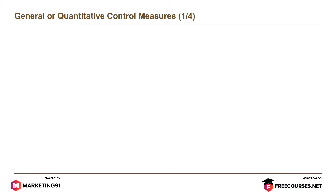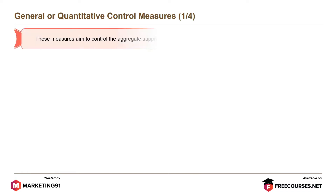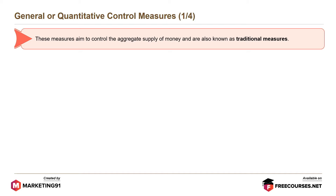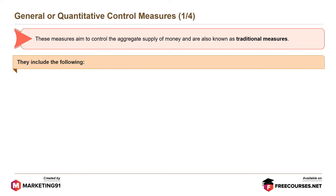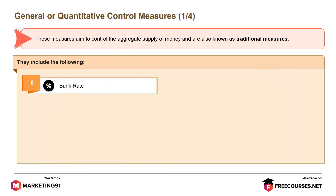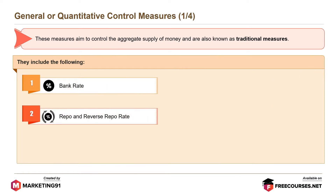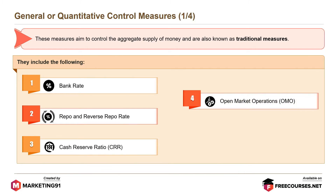General or quantitative control measures aim to control the aggregate supply of money and are also known as traditional measures. They include: bank rate, repo and reverse repo rate, cash reserve ratio or CRR, open market operations or OMO, and statutory liquidity ratio or SLR.